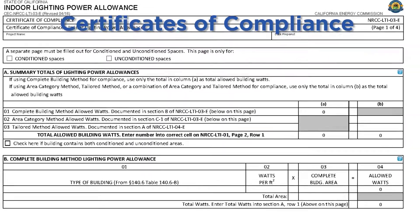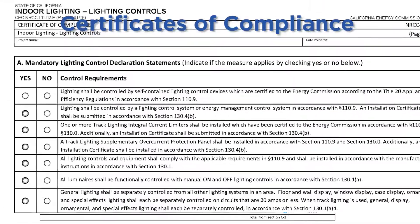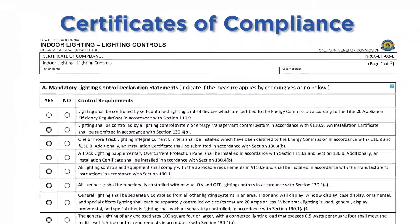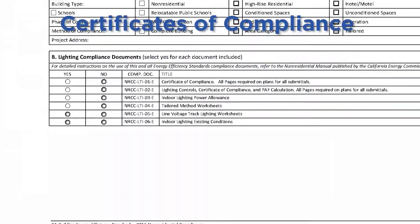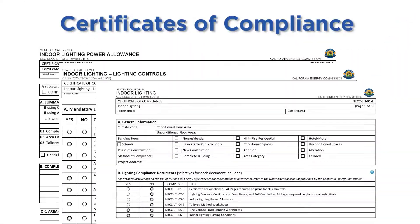In general, there are three types of compliance forms that are required for lighting alteration projects. We'll briefly review these now and cover details on each later in the module when we discuss the various compliance pathways. Certificate of compliance forms are submitted to the building department during the permit phase of the project. These forms help plan checkers verify that the proposed lighting system alteration is in compliance with the energy standards.